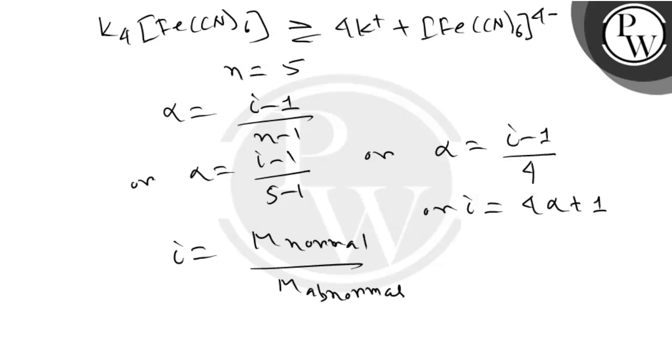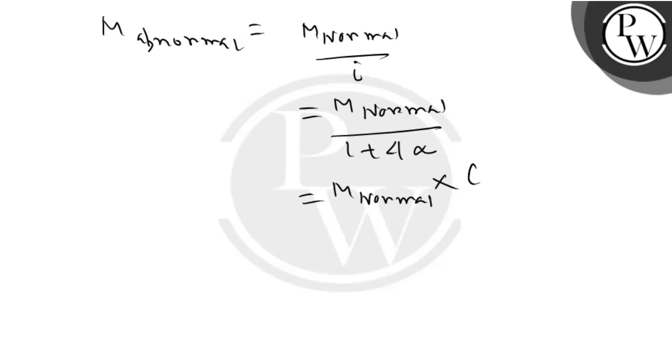Now M_abnormal equals M_normal divided by i, and the value of i that we have got here is M_normal/(1+4α), which can be written as M_normal(1+4α)^-1.